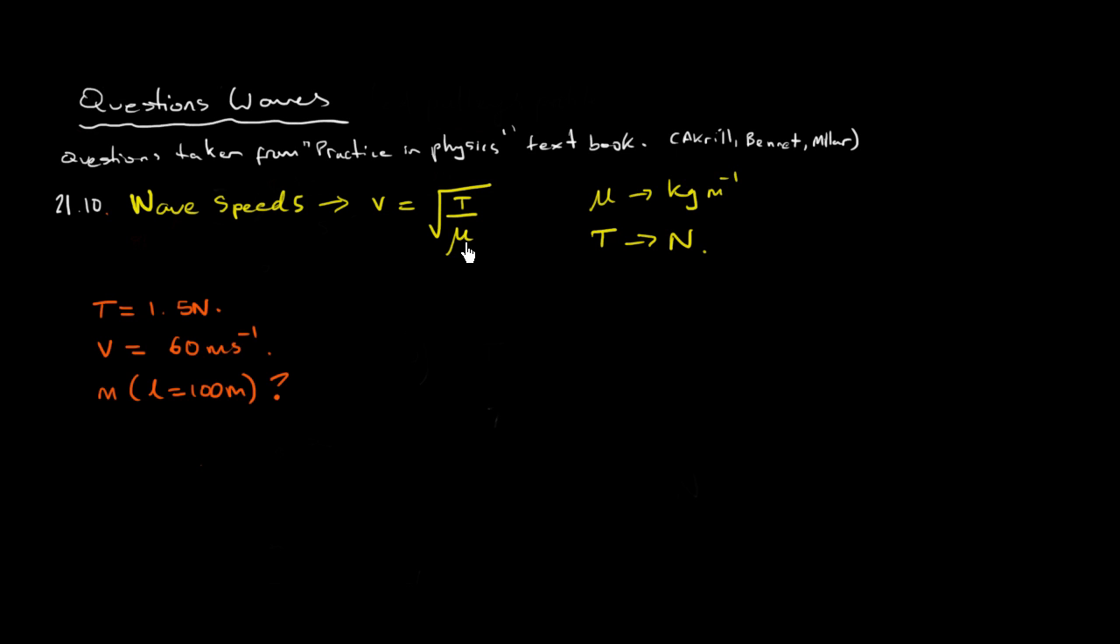And we said that μ was mass per unit length. In other words, the formula for μ you could see it as mass divided by the length. And the question is asking us for the mass and they give us a particular length. So, let's move the equation around to leave it in terms of μ first.